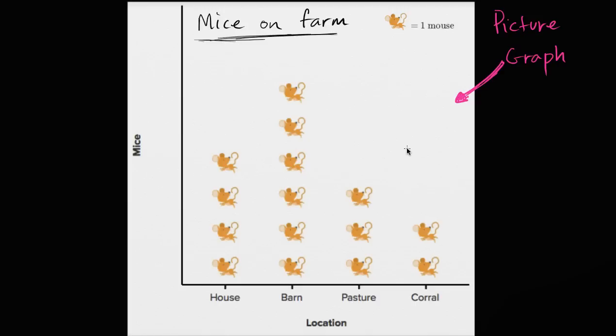What we have here is a picture graph. And the reason why it's called a picture graph is because it uses pictures to give us information. In this case, it uses the picture of a mouse. And it tells us that one of these little mouse pictures means one mouse. It equals one mouse.